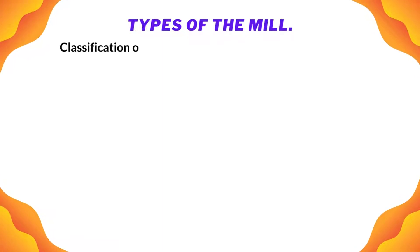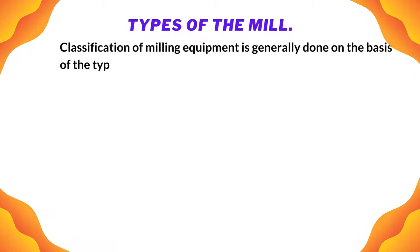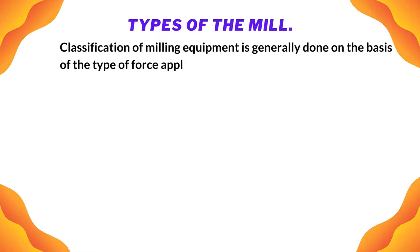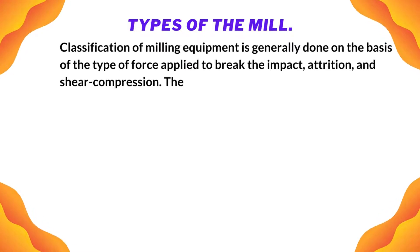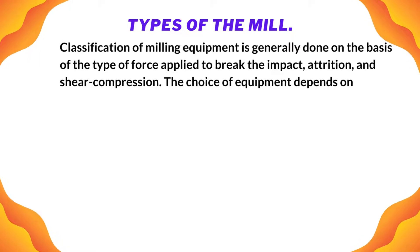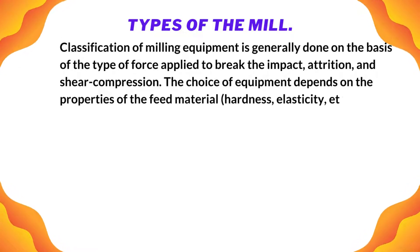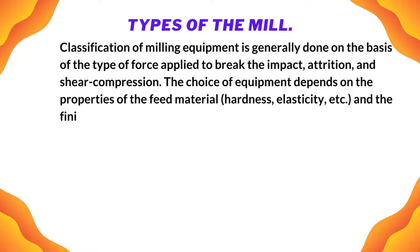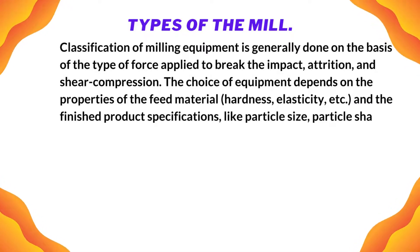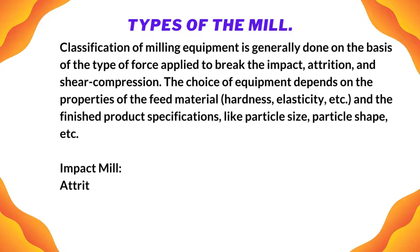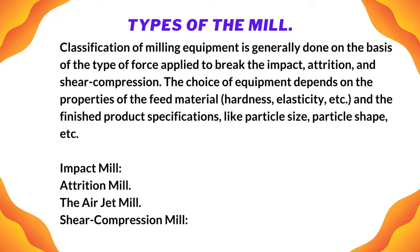Classification of milling equipment is generally done on the basis of the type of force applied to break the material: impact, attrition, shear, and compression. The choice of equipment depends on the properties of the feed material — such as hardness and elasticity — and the finished product specifications like particle size and particle shape. Types include: impact mill, attrition mill, air jet mill, and shear compression mill.